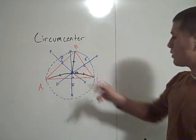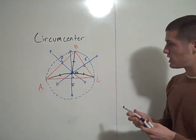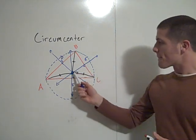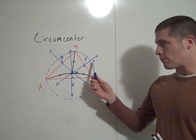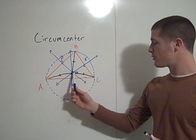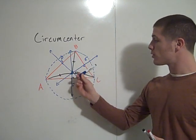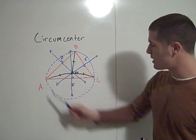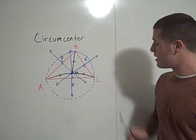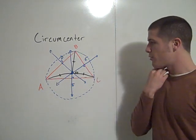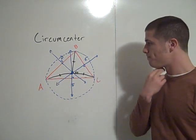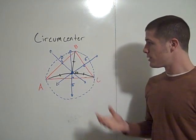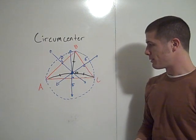So the circumcenter G is the center of the circle that grabs each of the vertices of the triangle. That's the circumcenter.